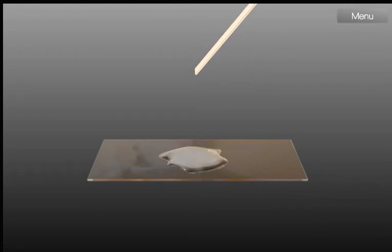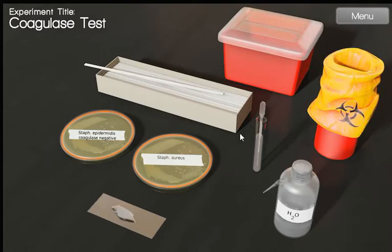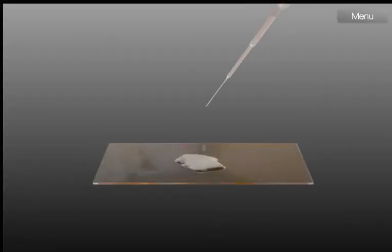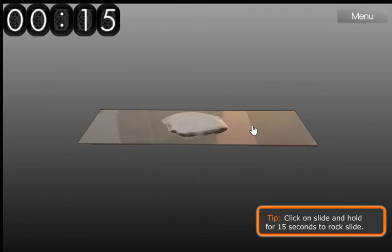We prepare the bacterial suspension. After that, we add rabbit plasma and hold and rock the slide for 15 seconds.